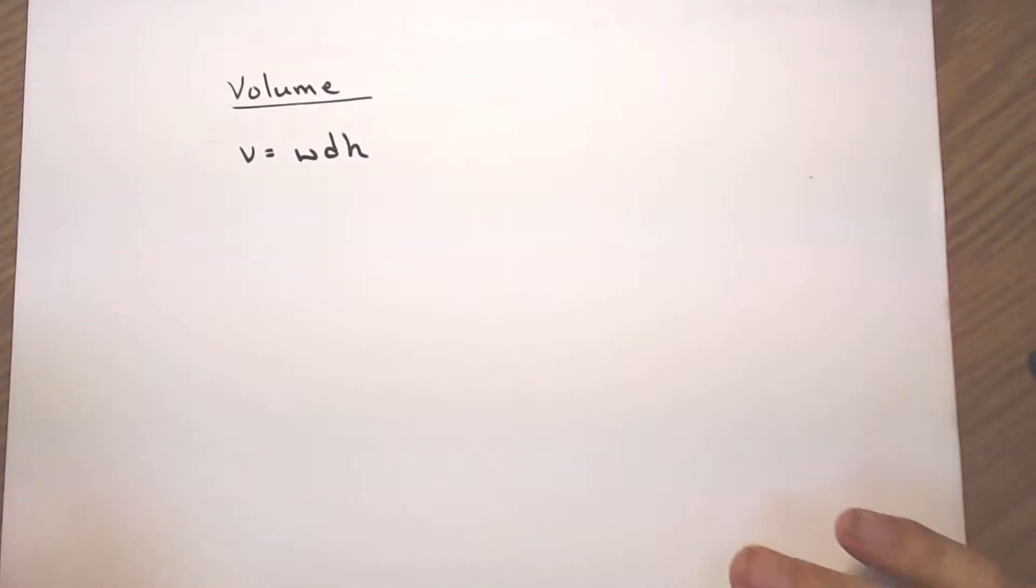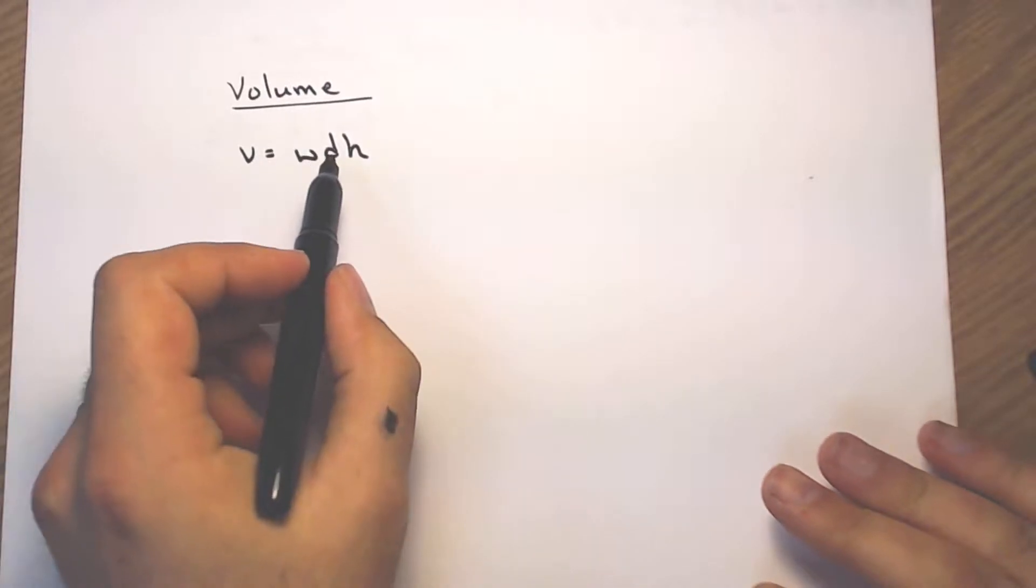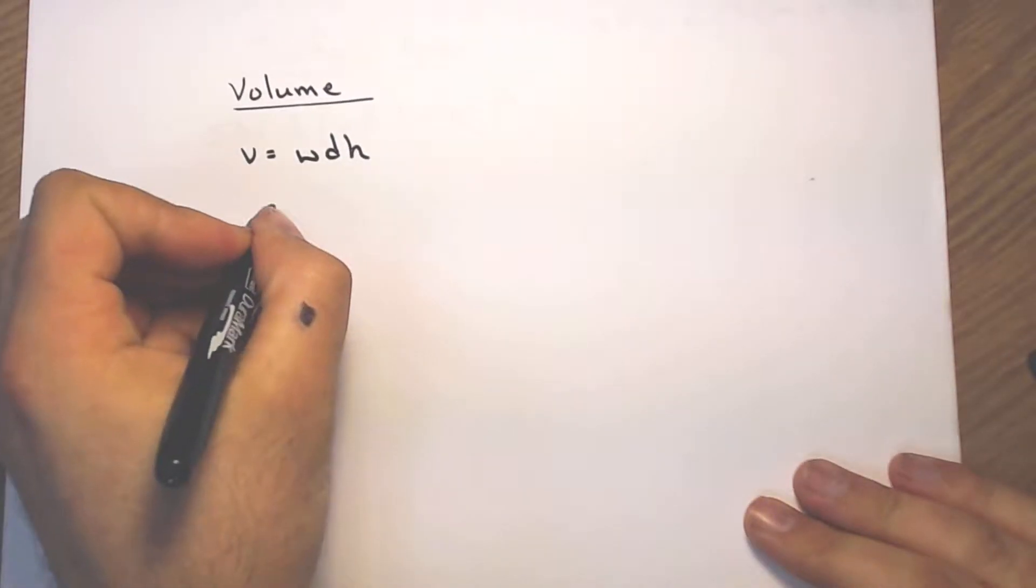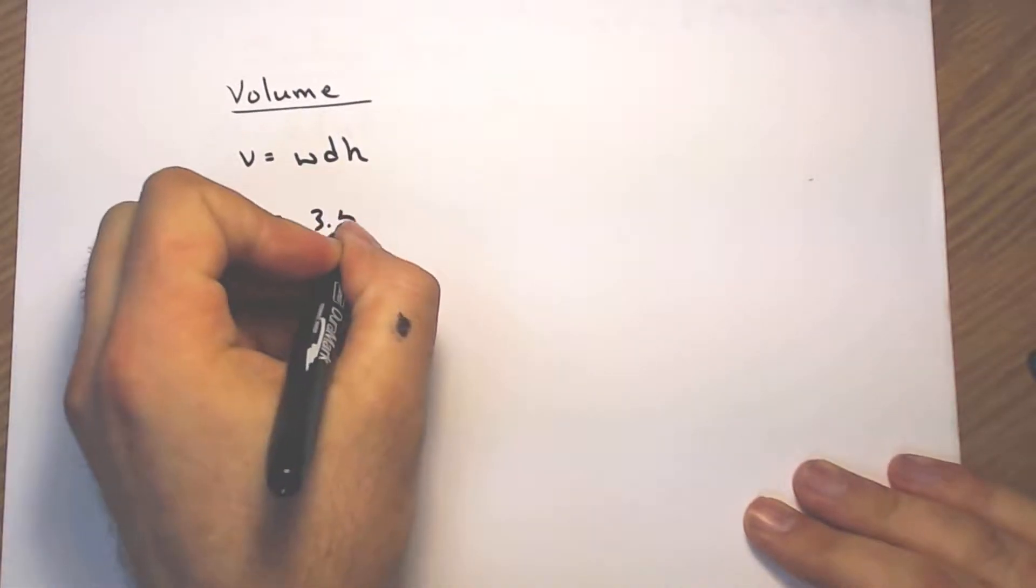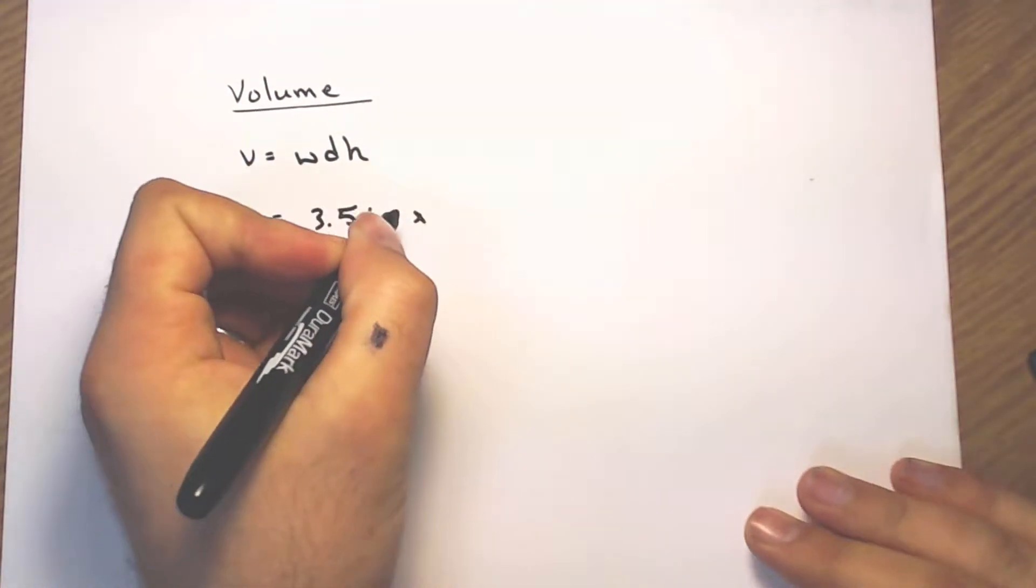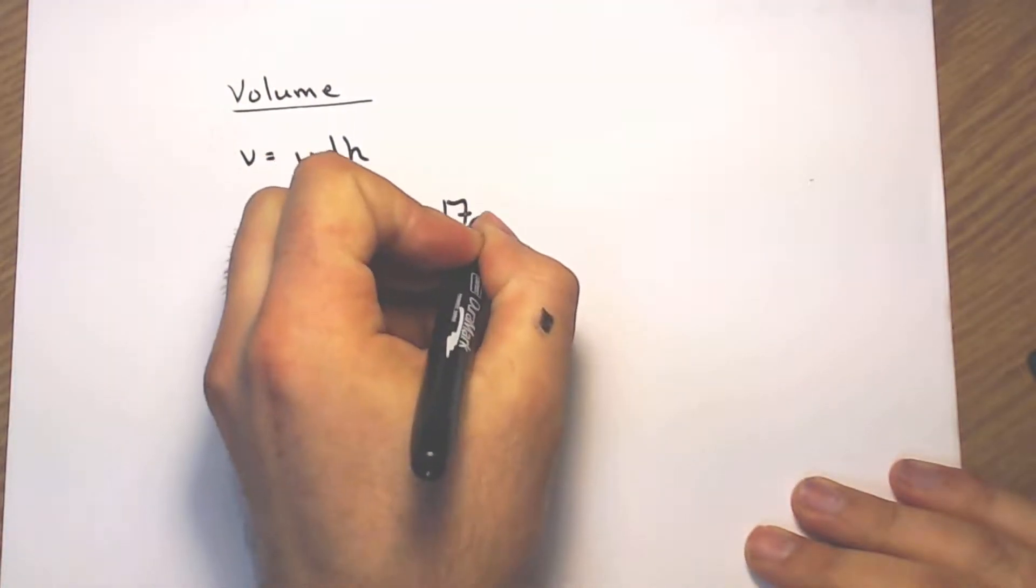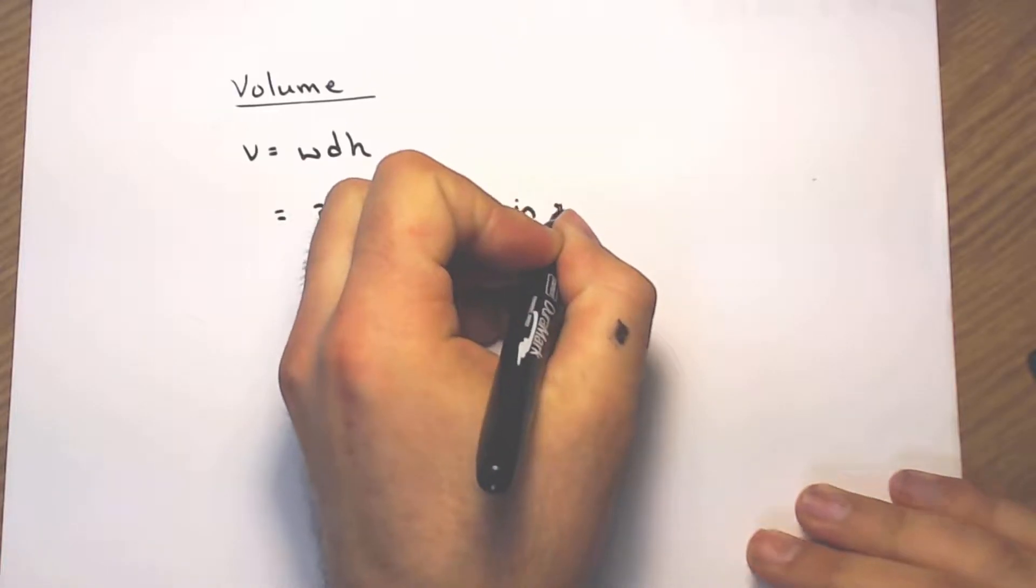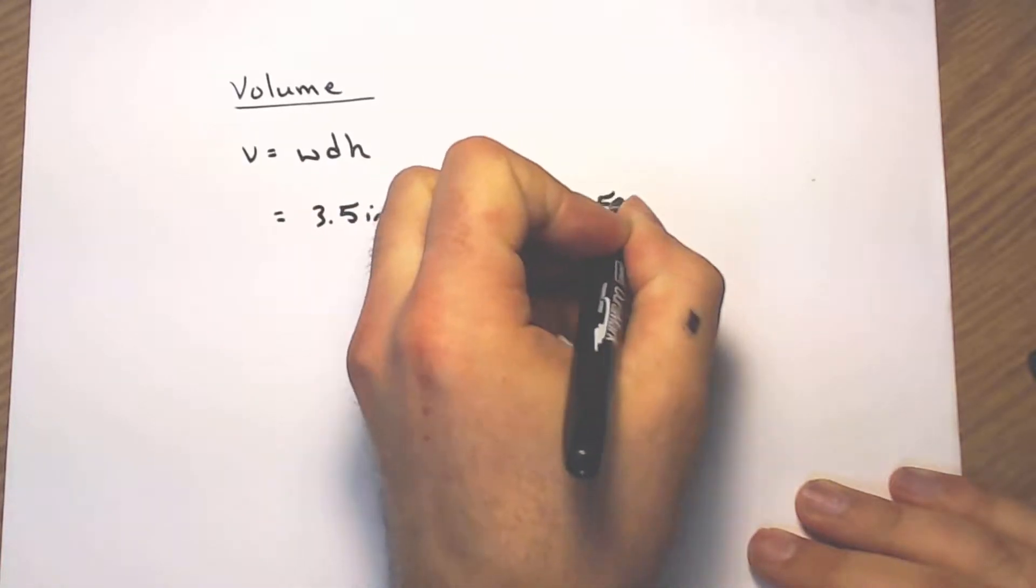When I'm finding volume of a rectangular prism, I have to do width times depth times height. In this case, that means it's 3.5 inches times 17.0 inches times 1.5 inch.